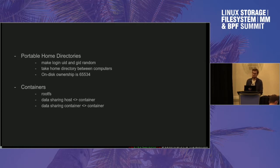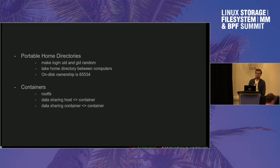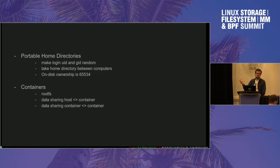The only option to solve this problem is to recursively chown all of these files, which gets even more problematic if you consider that in your home directory it's not necessarily the case that only UIDs and GIDs corresponding to your user have been written to disk. There could be files some daemon created with a specific UID and GID. So if you recursively chown, you lose all of that information — an issue that systemd, for example, frequently ran into.